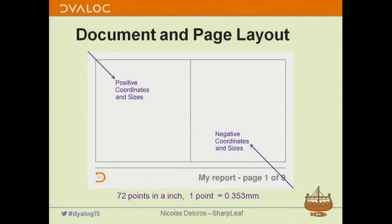Once you've decided on the paper size, all the coordinates will be — when positive — going from the top left in that direction, and when negative, the other way around. That's quite convenient to place stuff. Obviously you can have positive x and negative y and whatever. The unit is the standard typographical unit, which is a point.